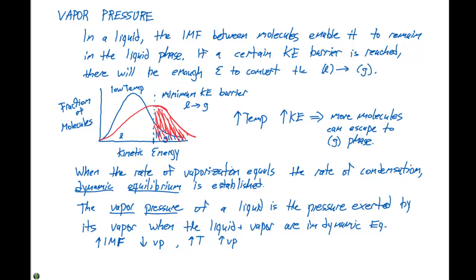From this, we can determine something called a boiling point. The boiling point is going to be dictated by some external pressure. A liquid is going to boil when its vapor pressure equals the external pressure acting on the surface of the liquid. We're going to observe bubbling, or bubbles of vapor forming within the liquid. And this temperature at which a liquid boils is going to increase with increasing external pressure, so we have to come up with a term called a normal boiling point.